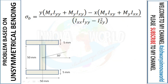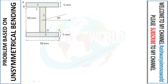The bending stress formula is: σb = [Mx·Iyy + My·Ixy] / [Ixx·Iyy − Ixy²] · y  −  [Mx·Ixy + My·Ixx] / [Ixx·Iyy − Ixy²] · x. Substituting all known values, we get the general equation for this section: σb = 0.54y − 1.12x. After this, we set the centroid as the origin.